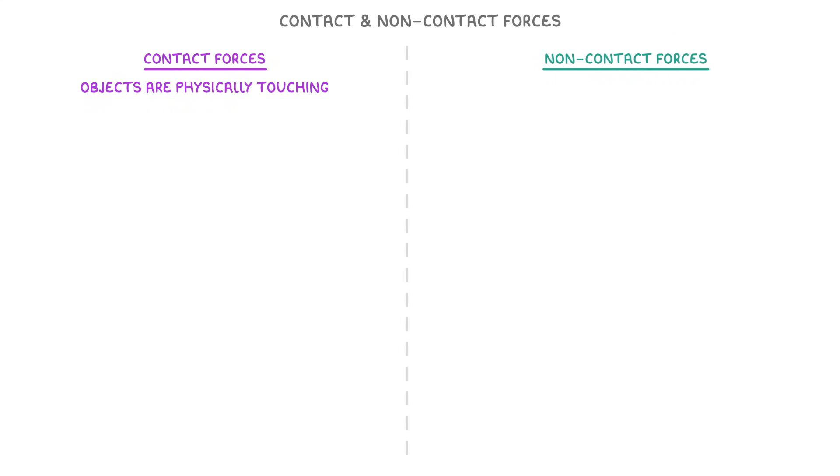Now, all forces can be divided into two different groups: contact and non-contact forces. The key difference between the two is that contact forces are those where the two objects are physically touching, whereas non-contact forces are those that don't require the two objects to be touching.